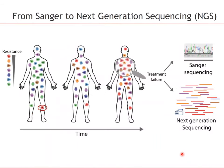This diversity is relevant from a medical point of view. For example, low frequency viral variants can be involved in the development of drug resistance. Here's a time course shown schematically for a single patient infected with a virus, where the composition of the different variants changes over time. At the time of treatment failure, the traditional approach to analyzing the virus population was based on Sanger sequencing.